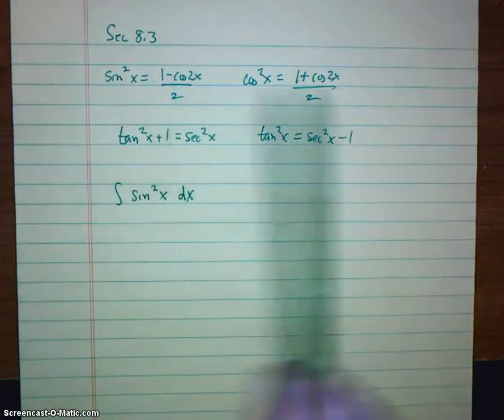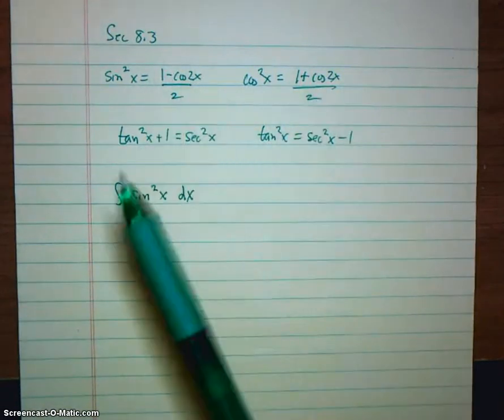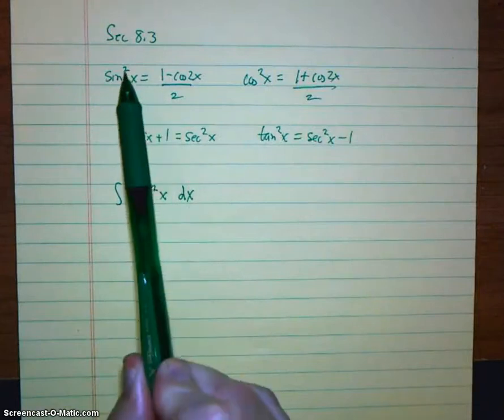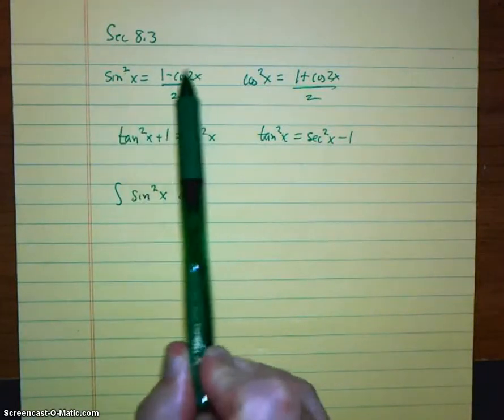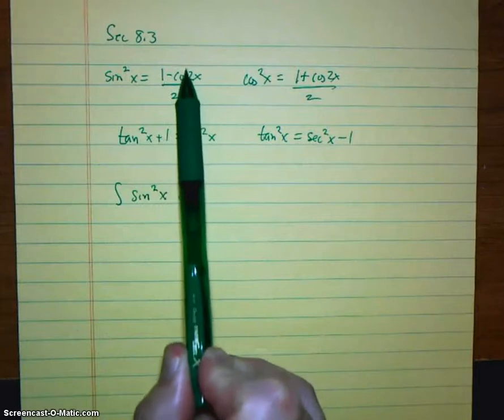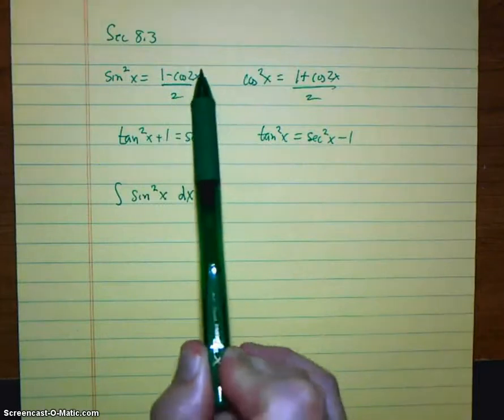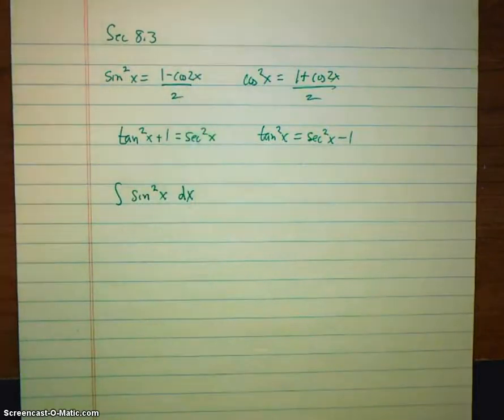That's where these power reduction formulas come in. So notice what these allow you to do, they allow you to start with an even power, reduce it, so that you have a power of 1. The penalty is you get this little 2x and you get this 1 half.